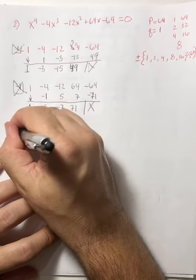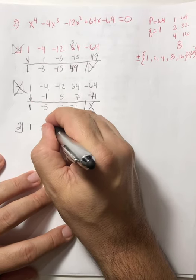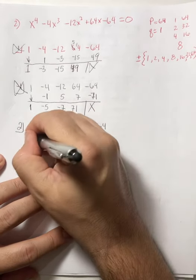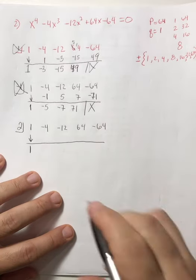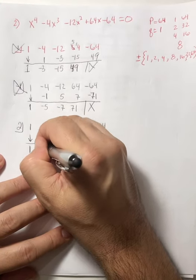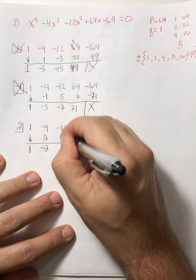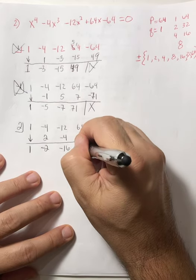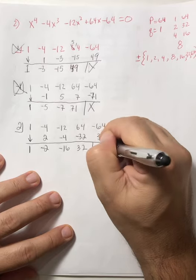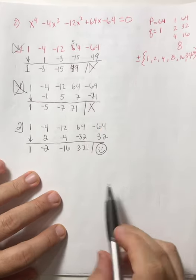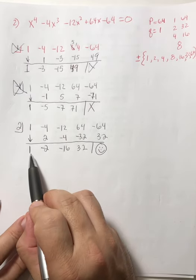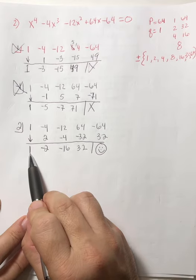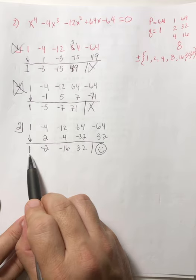Let's try 2. Coefficients: 1, negative 4, negative 12, 64, negative 64. Drop the lead. 2 times 1 is 2, we add to get negative 2. 2 times negative 2 is negative 4, we add to get negative 16. 2 times negative 16 is negative 32, we add to get 32. And then 2 times 32 — it works! Now what degree is this? There are four terms — this is a third-degree equation.